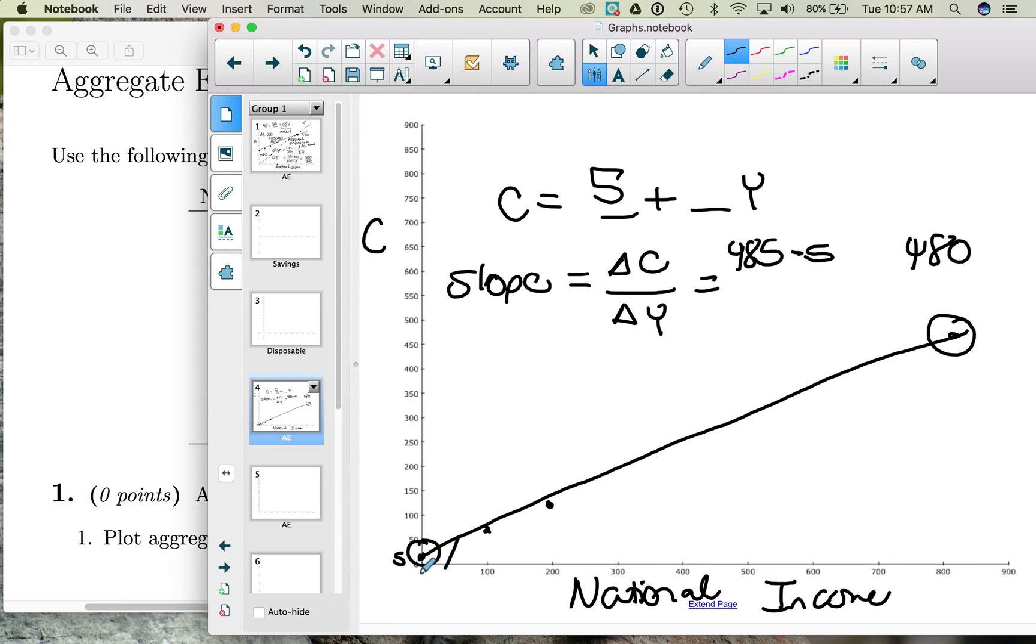National income goes from zero to 800. So 800 minus zero, and that is a change of 800.